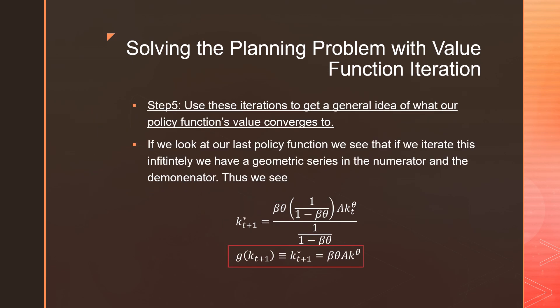Step number five is that we're going to use these iterations to get a general idea of what our policy function's value function converges to. If we look at our last policy function, we can see that if we iterate this infinitely, we have a geometric series in the numerator and denominator. Thus, we get the following intermediate result. Solving that further, we get a much cleaner looking policy function where our rule is βθ times our production function akᶿ. So that's our policy function from value function iteration.